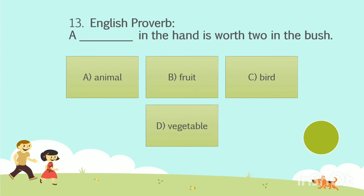Question No. 13. English Proverb: A blank in the hand is worth two in the bush. Option A: Animal. Option B: Fruit. Option C: Bird. Option D: Vegetable. Your time starts now. The answer is Option C: Bird.